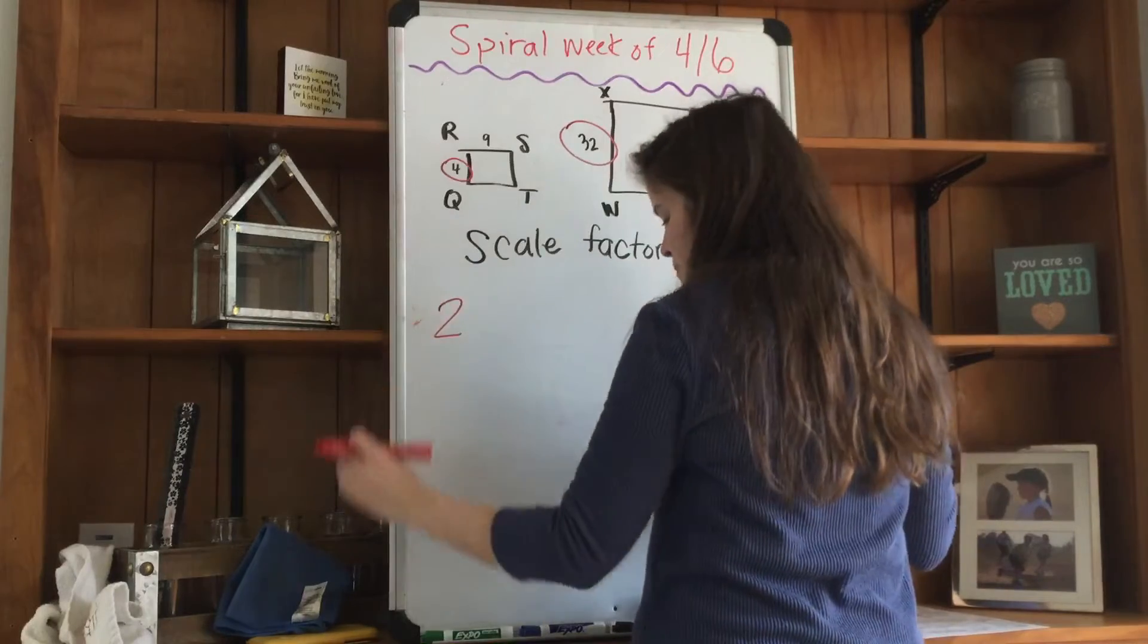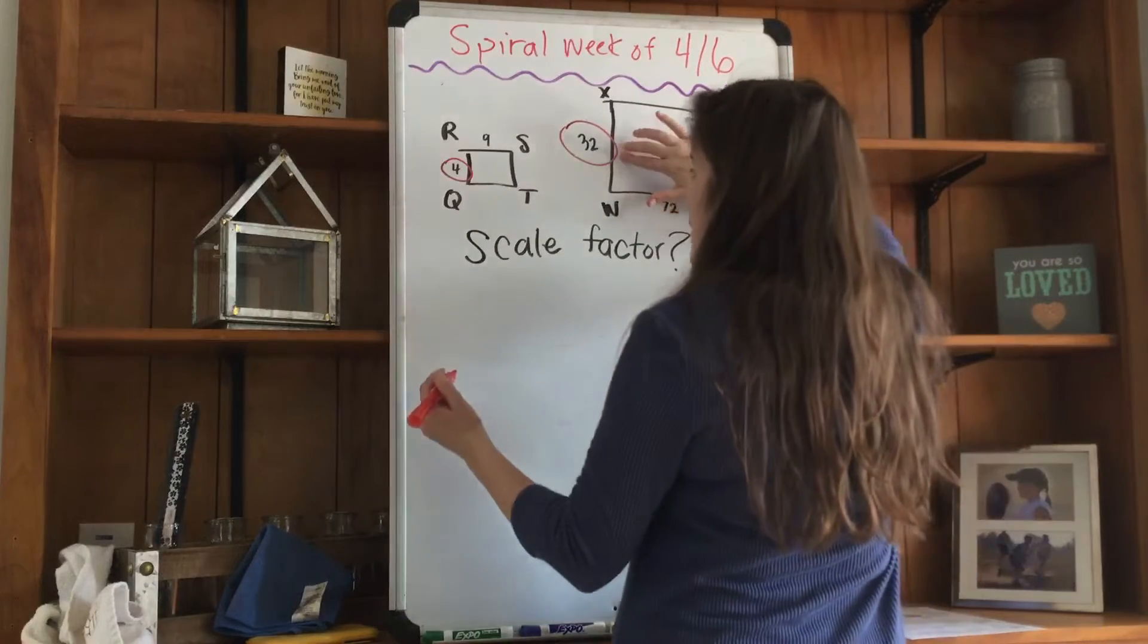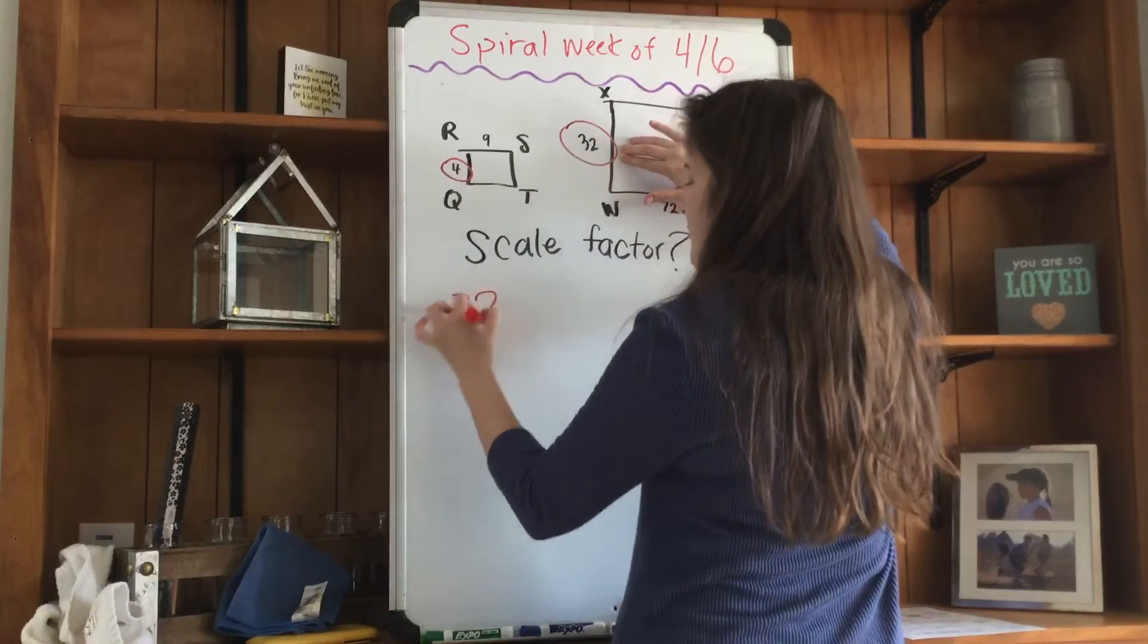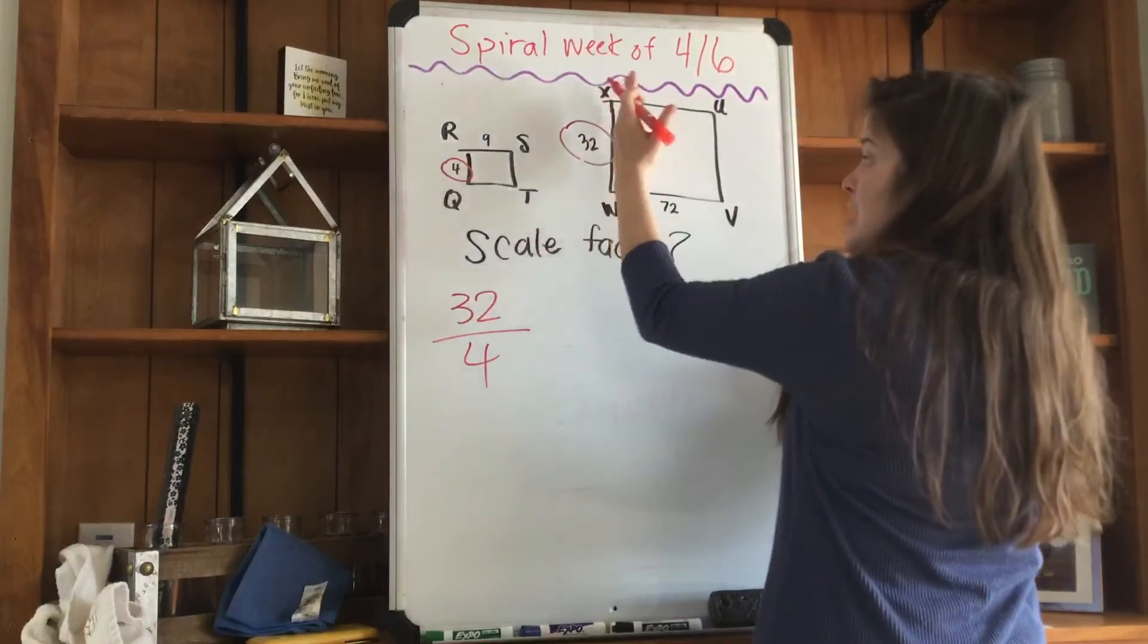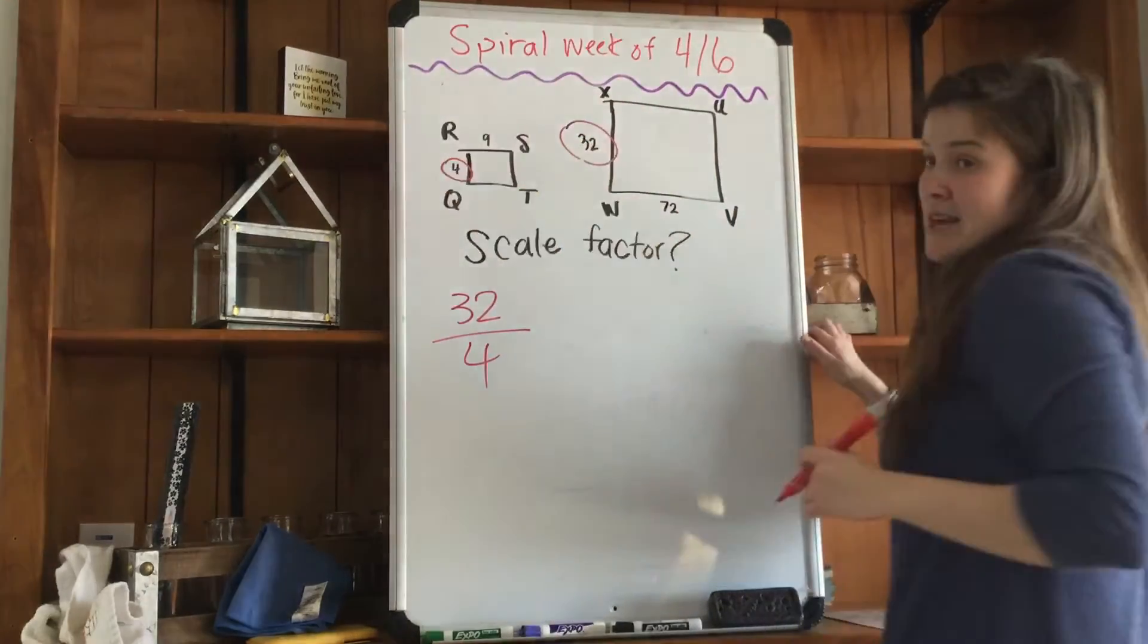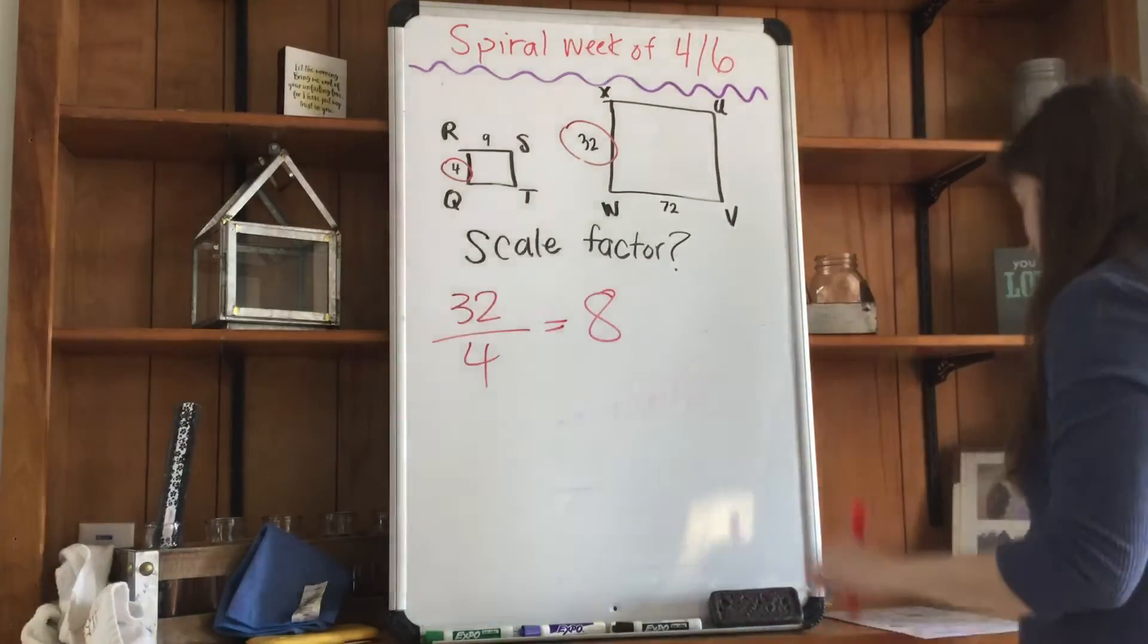I'm going to take my right rectangle, 32 divided by 4, because these are the like sides. They're in the drawing, the like sides. So 32 divided by 4 equals 8. Eight is my scale factor,